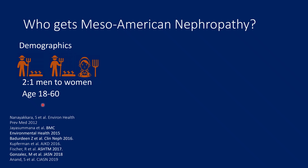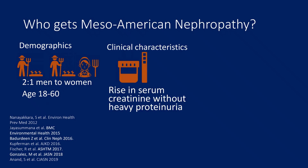It is more common in the age group between 18 and 60. There is a rise in serum creatinine without heavy proteinuria — it is typically tubular proteinuria. A supportive clinical feature is a history of repeated episodes of unexplained acute kidney injury, usually related to exposure to hot weather and other environmental factors.